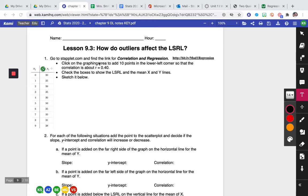Number one says go to staplet.com and find the link for correlation and regression. I'm just going to be honest with you, I don't like staplet. Your teacher might like it, but I don't. So I'm going to do this video using Desmos, and here is the link that I'm going to use. Feel free to go to it. It has a regression table set up for you.